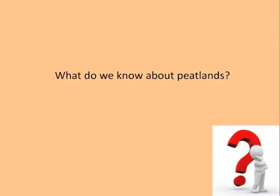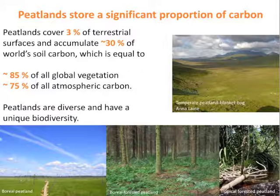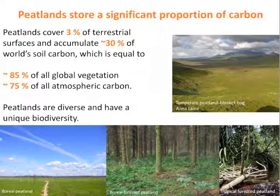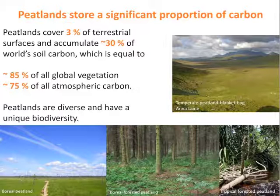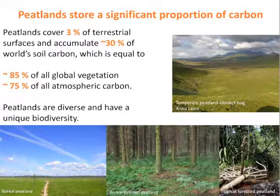For those who are new to the field, let's start by introducing some concepts, definitions, and explaining the current state of peatlands. Peatlands store a significant proportion of carbon. It is estimated that even though they cover only 3% of terrestrial surfaces, they accumulate around 30% of the world's soil carbon, which is equal to 85% of global vegetation carbon and 75% of all atmospheric carbon — a huge amount of carbon located in a small area. Peatlands are very diverse and have unique biodiversity; they can be forested or afforested.